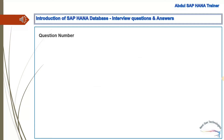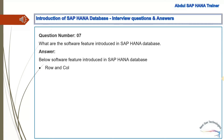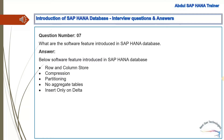Question 7: What are the software features introduced in the SAP HANA database? Answer: Row and column store, compression, partitioning, no aggregate tables, and insert-only on delta data.